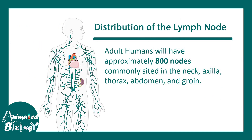Lymph nodes are distributed all over the body. Adult humans will have approximately 800 to 1000 lymph nodes, generally located in the neck, axilla, thorax, abdomen, or in the groin region.